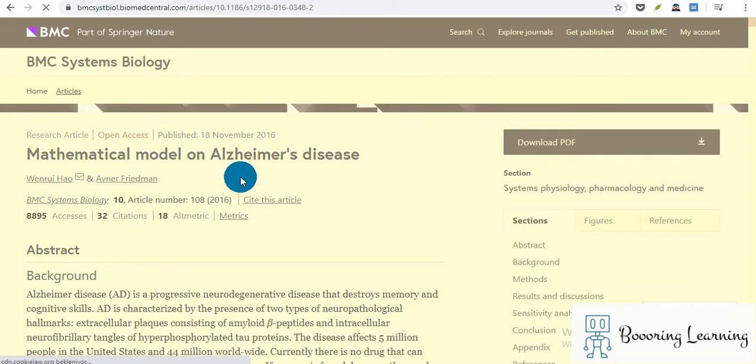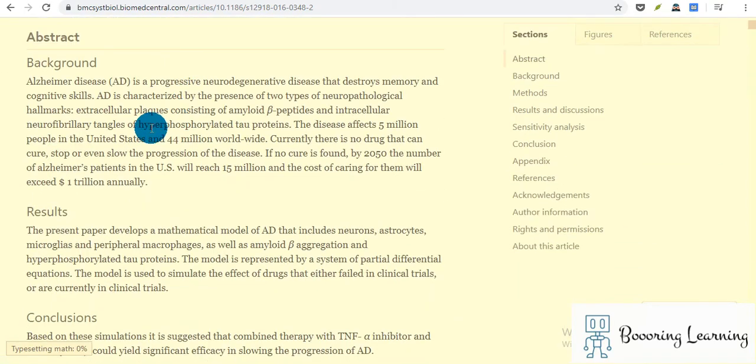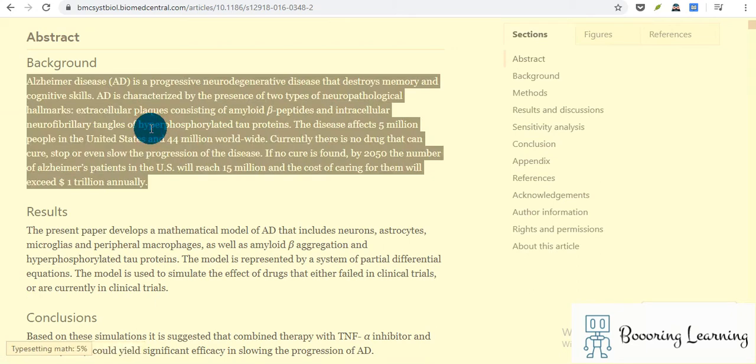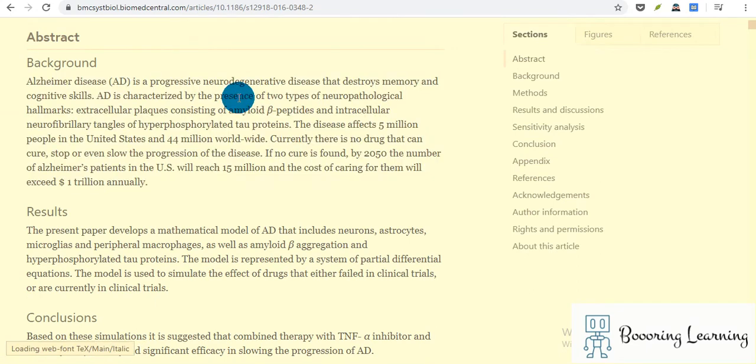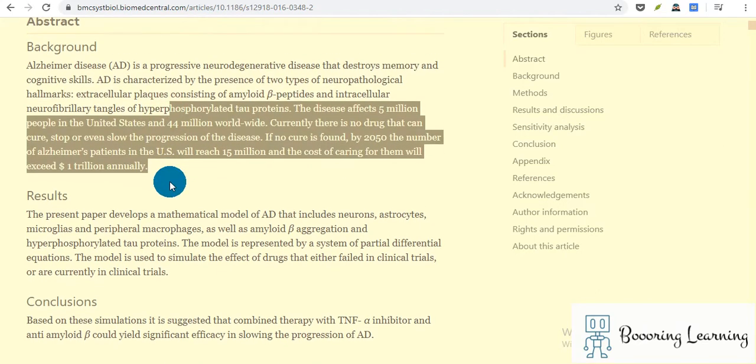This article on mathematical model on Alzheimer's disease. The article is published in this journal. Alzheimer's disease is a progressive neurodegenerative disease that destroys memory and cognitive skills and is characterized by two types of neuropathological hallmarks: extracellular plaques consisting of amyloid beta peptides and intracellular neurofibrillary tangles of hyperphosphorylated tau proteins.